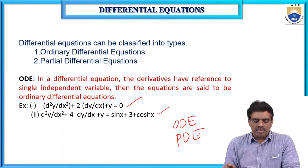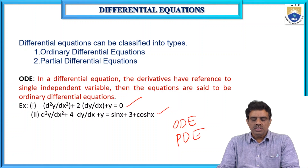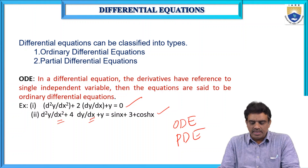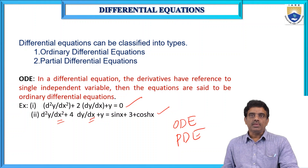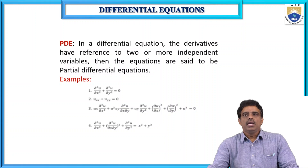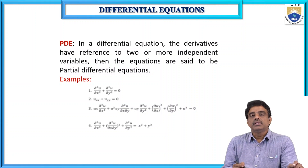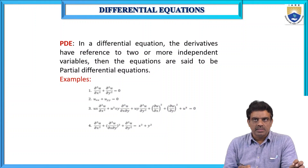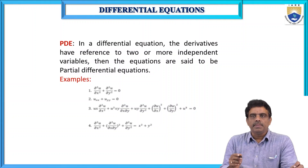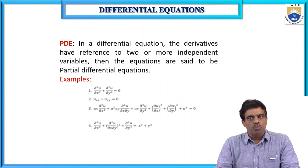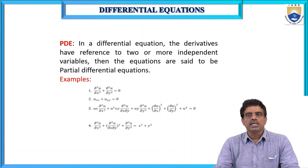Similarly, in the second example, d²y/dx² + 4(dy/dx) + y = sin x + 3 + cos hx — the derivatives also have reference to the single independent variable x, so this is also an ordinary differential equation. For a partial differential equation, if in the given differential equation the derivatives have reference to two or more independent variables, then it is called a partial differential equation.